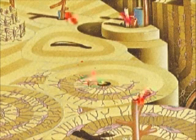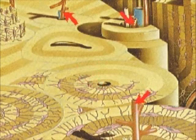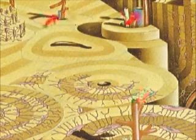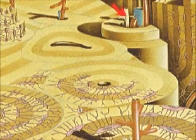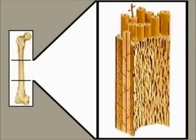Arteries carrying oxygenated blood are shown in red. Veins carrying deoxygenated blood are shown in blue. The lymphatic vessels are shown in white. A section through the shaft of the femur, a long bone, shows a central mass of spongy bone surrounded by the branching tubular Haversian systems. Blood vessels on the bone surface reach into the center of each Haversian system, supplying the bone cells.